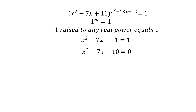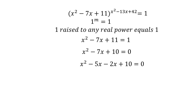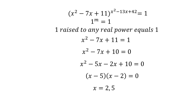We have to factorize x squared minus 7x plus 10 equals 0. We need two numbers whose product is 10 and whose sum is minus 7, and that's minus 5 and minus 2. So we split minus 7 into minus 5 and minus 2, giving x squared minus 5x minus 2x plus 10 equals 0. Factoring gives x minus 5 and x minus 2, so x equals 2 or x equals 5.